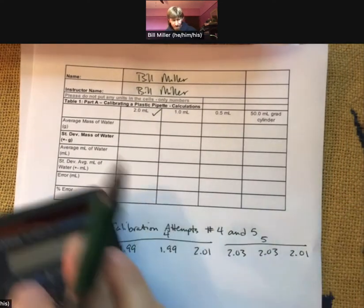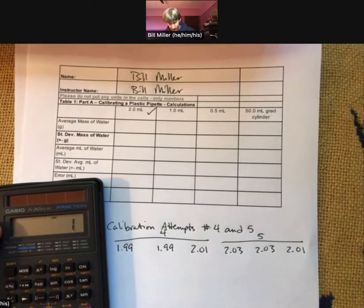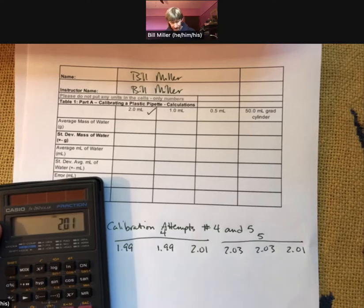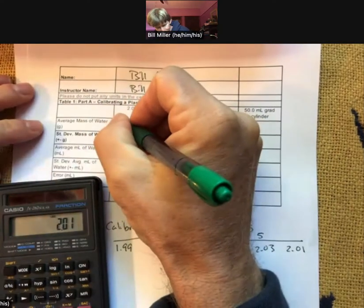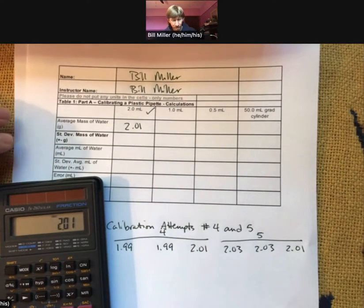1.99 plus 1.99 plus 2.01 plus 2.03 plus 2.03 plus 2.01 divided by 6, I get 2.01. So 2.01 is going to be my average mass of water.